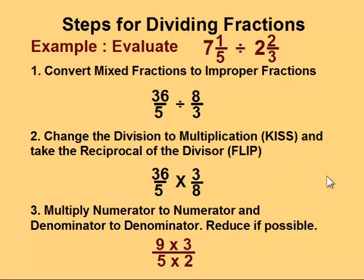Leaving us with 9 times 3 in the numerator, and 5 times 2 in the denominator. Nothing else can be divisible by any common factors, so let's complete our multiplication. We get 27 on top, and 10 on the bottom.